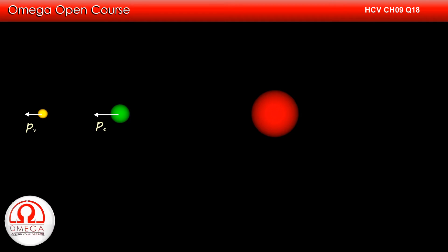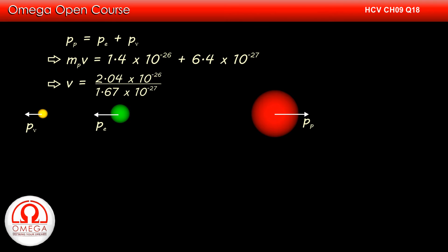If v be the speed gained by the proton, then its momentum is m_p times v where m_p is the mass of the proton. The momentum of proton is equal in magnitude to the sum of momenta of electron and anti-neutrino. Thus m_p v equals 1.4 x 10^-26 plus 6.4 x 10^-27, which implies v equals 2.04 x 10^-26 divided by m_p.